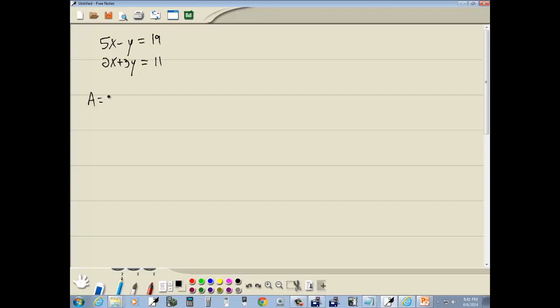I want to write down my A matrix, which is just the numbers off of our variable terms on the left side. Drop the x's and y's and keep the numbers and their signs, so we got five, negative one, two, three.